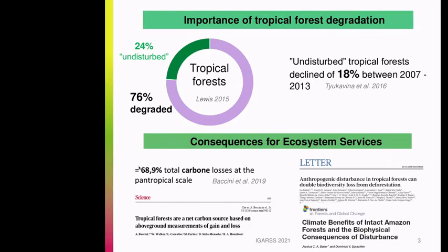This degradation triggers tremendous impacts on ecosystem services. For carbon emissions, Baccini showed that 68.9% of overall forest carbon losses come from degradation. Degradation also has impacts on biodiversity and local to regional water fluxes and climates.